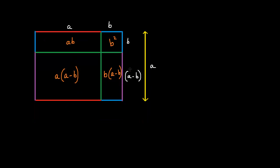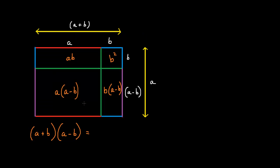Now using this rectangle, we are going to discover what a plus b multiplied by a minus b is. If we look at this rectangle carefully, we can see that a plus b multiplied by a minus b equals a multiplied by a minus b, plus b multiplied by a minus b.